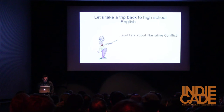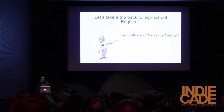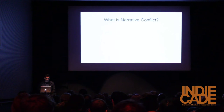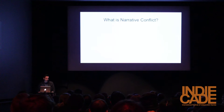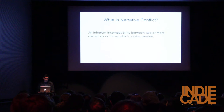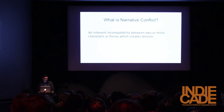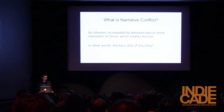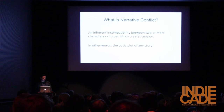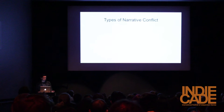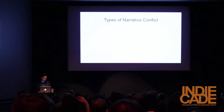Starting off this talk, let's take a trip back to high school English and talk about narrative conflict. What is narrative conflict? The textbook Wikipedia definition of narrative conflict is an inherent incompatibility between two or more characters or forces which creates tension. In other words, it's the basic plot of any story. There are different types of narrative conflict, usually narrowed down to four basic ones — the most popular ones — which I have changed to be a little bit more inclusive and gender neutral.